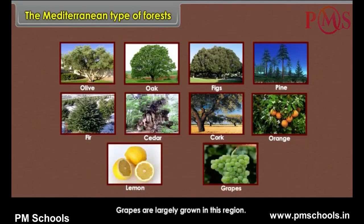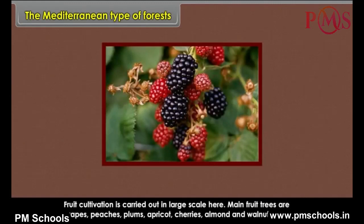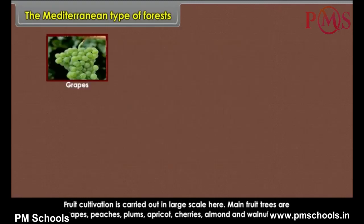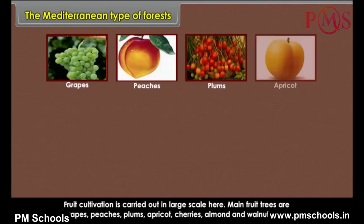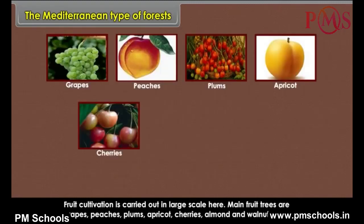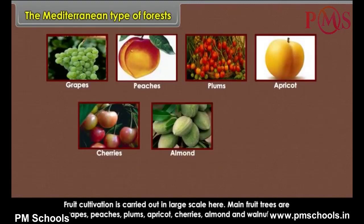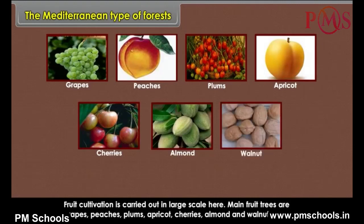Grapes are largely grown in this region. Fruit cultivation is carried out on a large scale here. Main fruit trees are grapes, peaches, plums, apricot, cherries, almond and walnut.